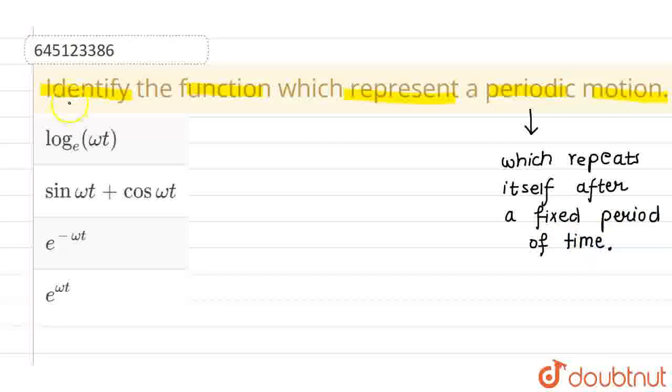Let us look at all the given options. So, the first option is log omega t. Now, we know that log is a continuously increasing function. This is not a periodic function. So, this cannot represent a periodic motion. Hence, this particular option is incorrect.